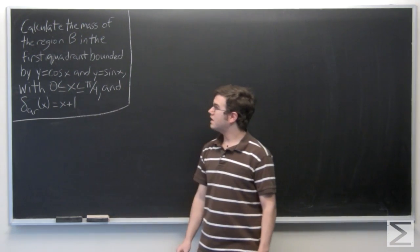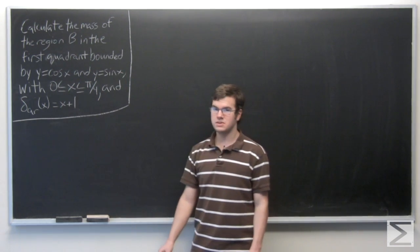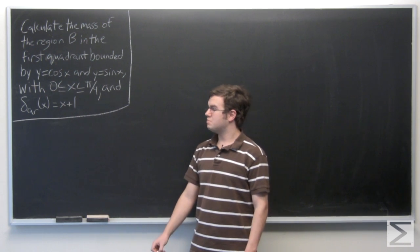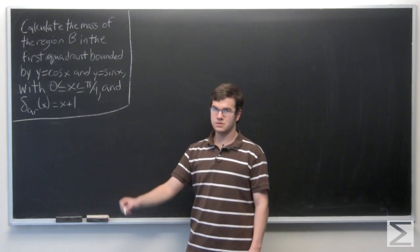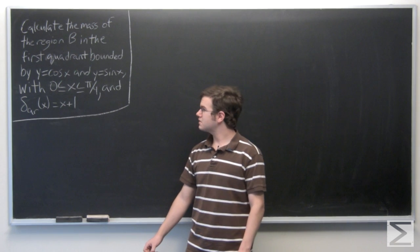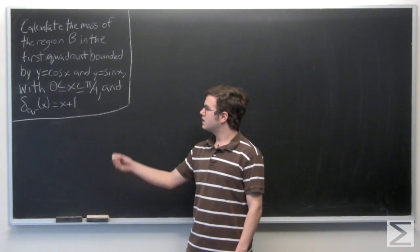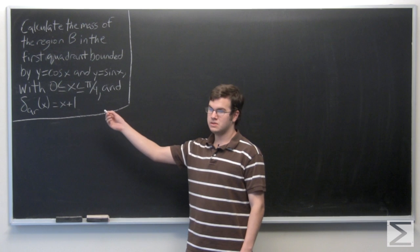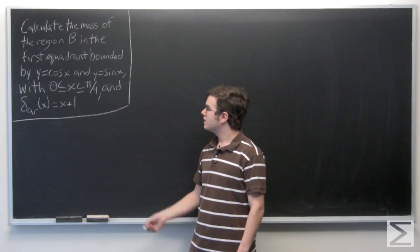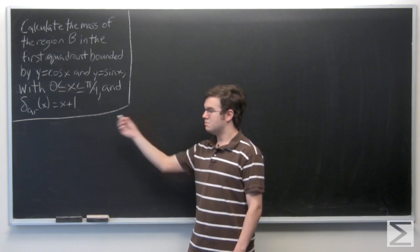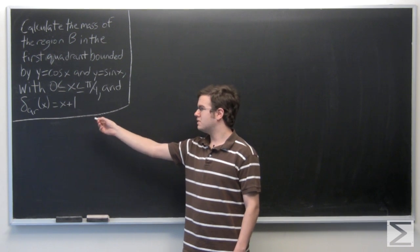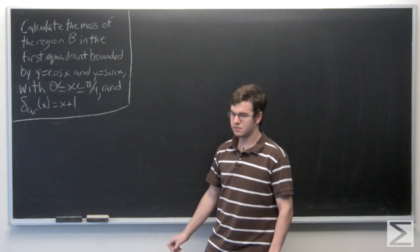In this problem, we need to calculate the mass of the region B in the first quadrant bounded by y equals cosine of x and y equals sine of x, with x being between 0 and pi over 4. The area density is x plus 1.